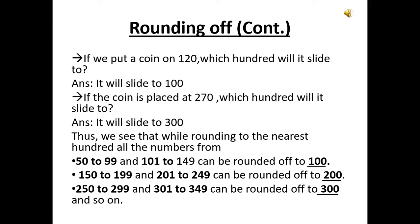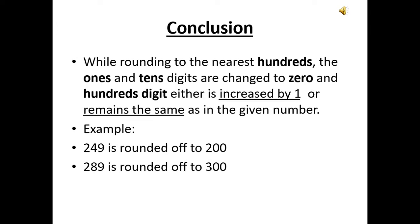Thus we see that while rounding to the nearest 100, all numbers from 50 to 99 and 101 to 149 can be rounded off to 100. Whereas numbers from 150 to 199 and 201 to 249 can be rounded off to 200, numbers from 250 to 299 and 301 to 349 can be rounded off to 300, and so on. We conclude that while rounding to the nearest hundreds, the ones and the tens digits are changed to 0.